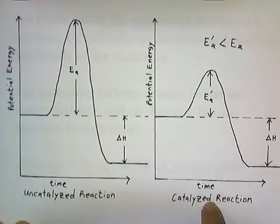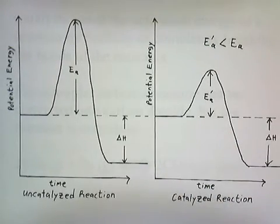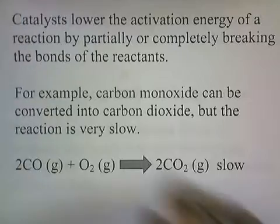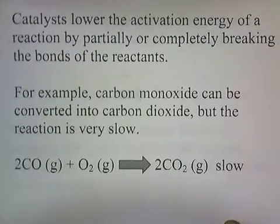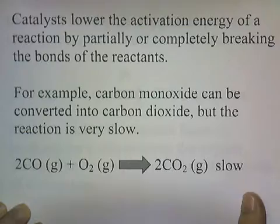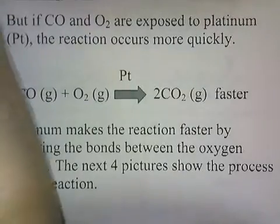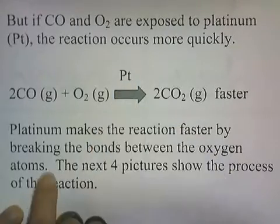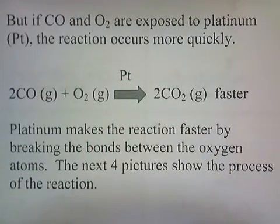The activation energy with the catalyst is lower; everything else is the same. Catalysts lower the activation energy of a reaction by partially or completely breaking the bonds of the reactants. For example, carbon monoxide can be converted into carbon dioxide, but the reaction is very slow. However, if carbon monoxide and oxygen are exposed to platinum, the reaction occurs more quickly. Platinum makes the reaction faster by breaking the bonds between the oxygen atoms.